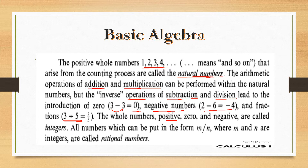Positive, zero, and negative whole numbers are all called integers. Numbers which can be put in the form of m/n, where m and n are integers, are called rational numbers.